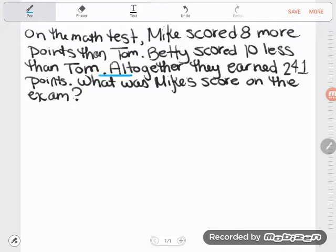But the problem is, if I keep reading, altogether they earned 241 points. What was Mike's score? Nobody ever tells me what Tom's score is. Even though everybody's being compared to Tom, Tom is a mystery. Well, in math, when there's a mystery, that's when algebra gets introduced. That's when we use a letter.